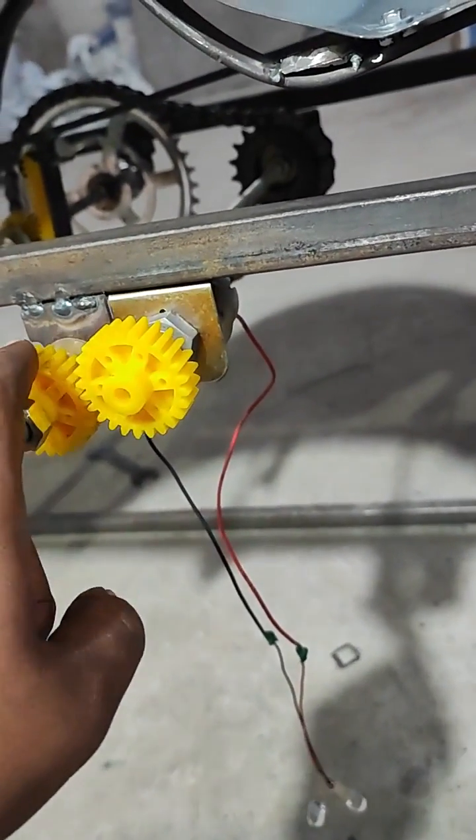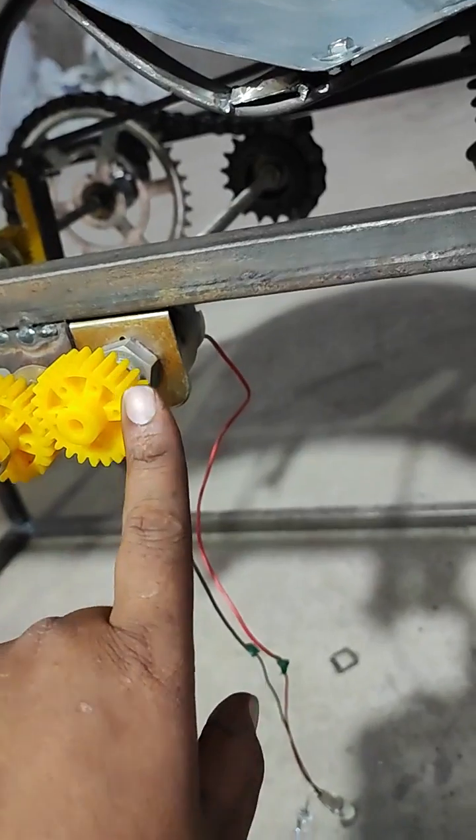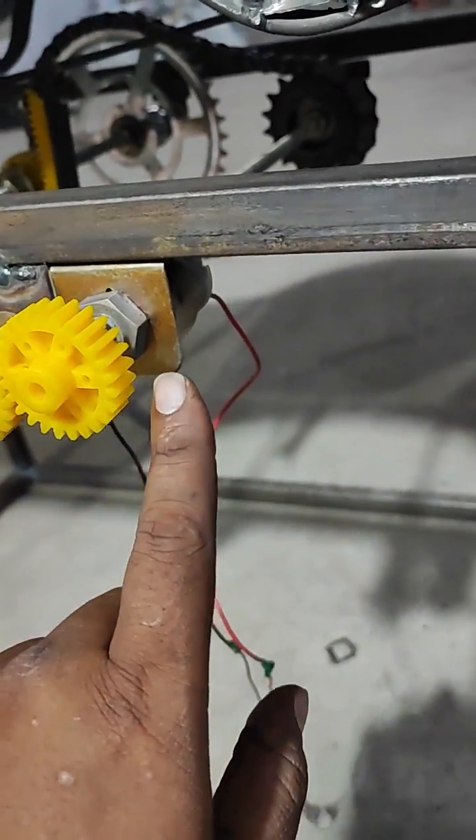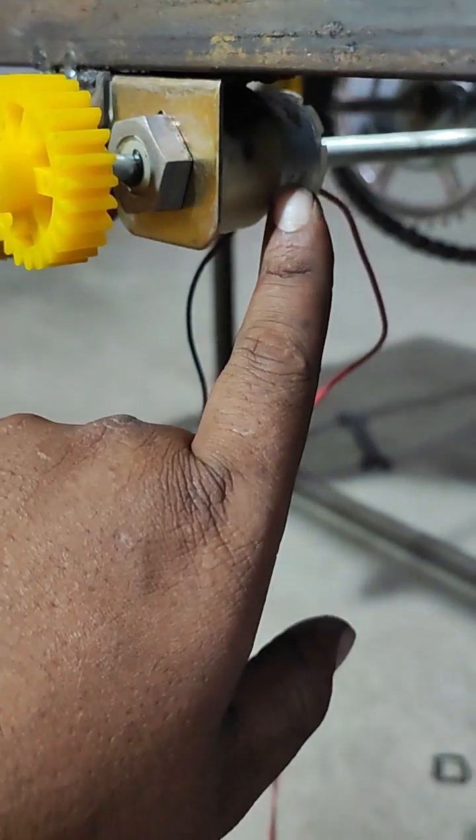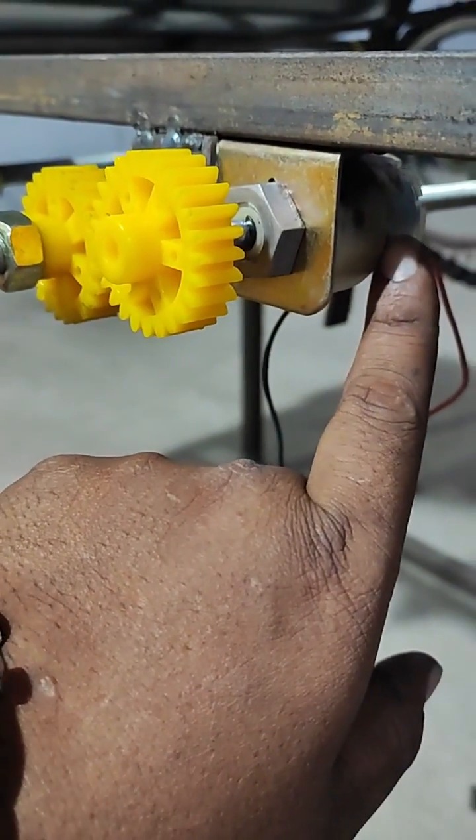Here we have used two spur gears which is one to one ratio. Whenever the spur gear is being rotated clockwise and anticlockwise, there is another gearbox which will be increasing the RPM and gives input to the winding.